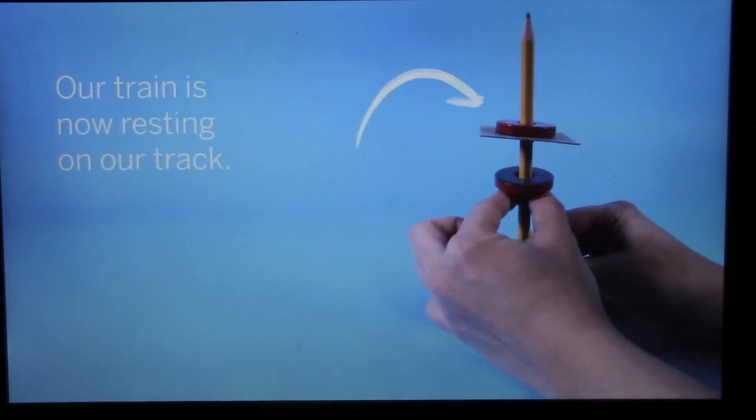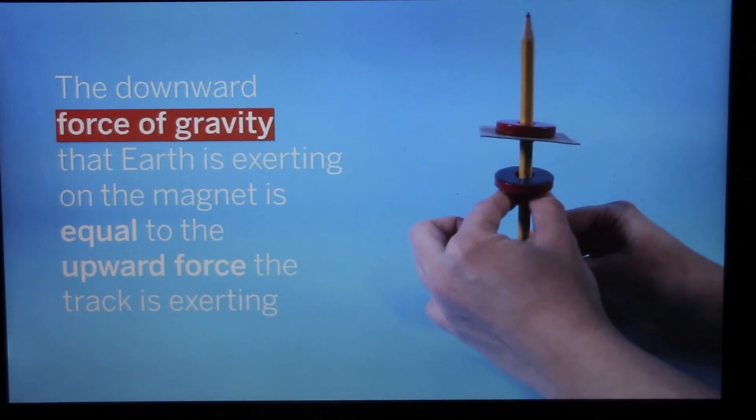Our train is now resting on our track. The forces are balanced. The downward force of gravity that Earth is exerting on the magnet is equal to the upward force the track is exerting on the magnet.